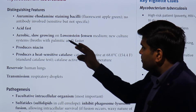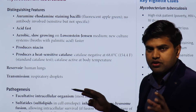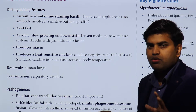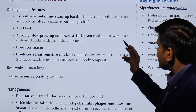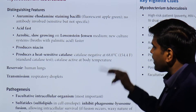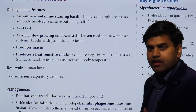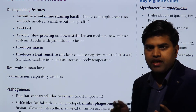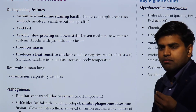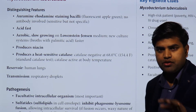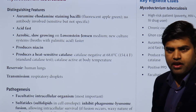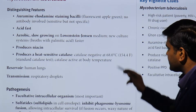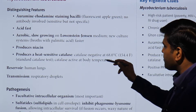The generation time is high — they are slow-growing on special media. The special medium for Mycobacterium tuberculosis is known as Löwenstein-Jensen medium. If a scenario mentions an organism grown on Löwenstein-Jensen medium, think about Mycobacterium tuberculosis. There are newer culture systems containing palmitic acid that grow the organism faster, and they produce niacin. An important characteristic is the heat-sensitive catalase: catalase is positive at room temperature, but at 68°C, unlike other bacteria, Mycobacterium tuberculosis is catalase-negative.